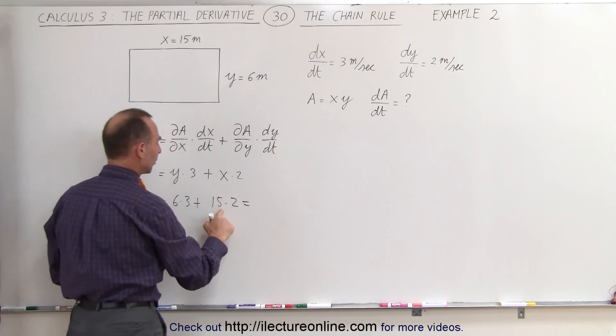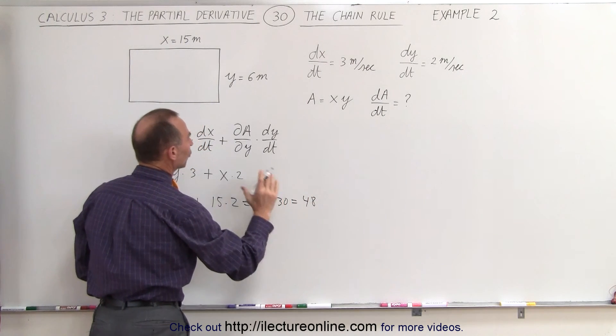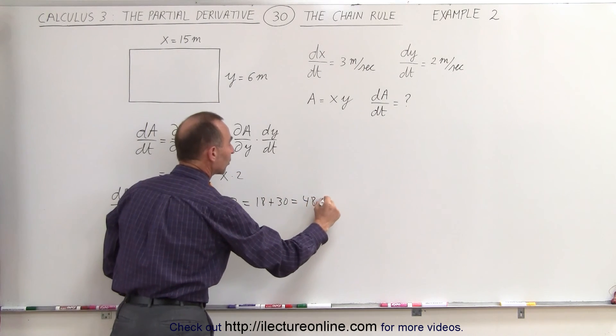That would be 18 plus 30, which is equal to 48, and the units would be meters squared per second.